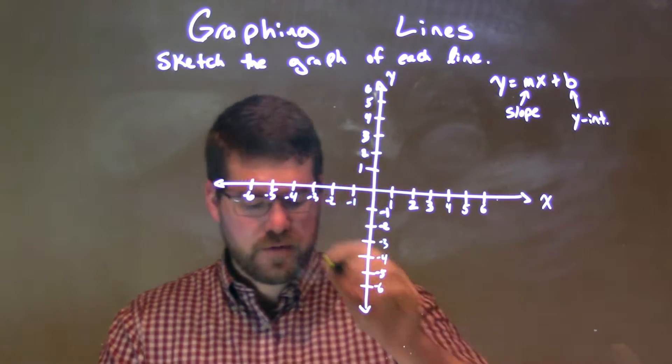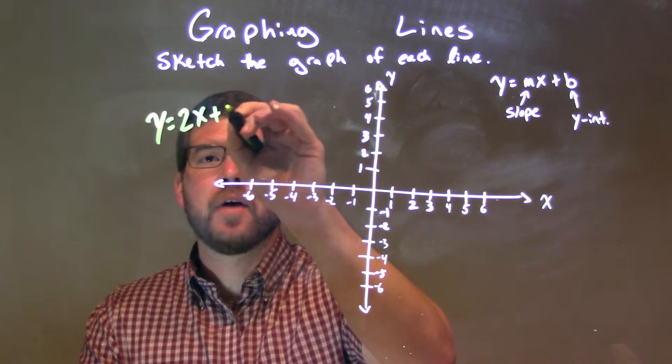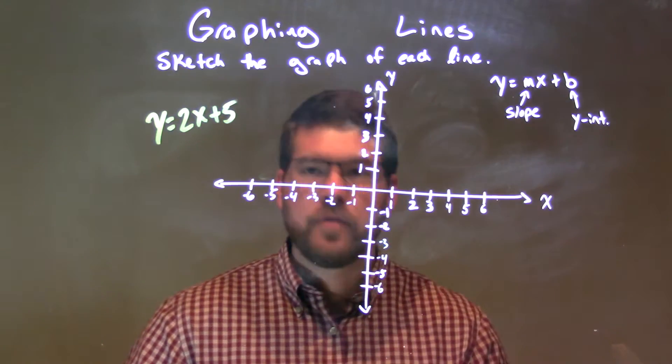So, if I was given this equation, y equals 2x plus 5. Okay? So we have 2x plus 5.